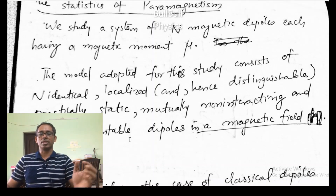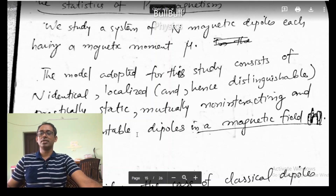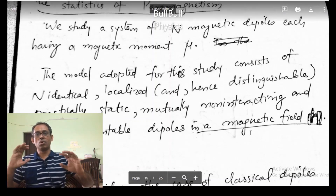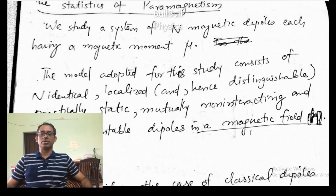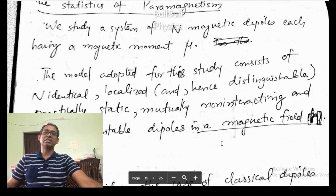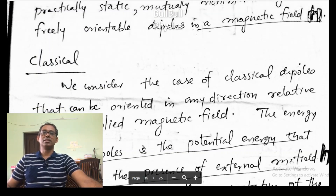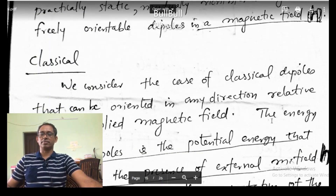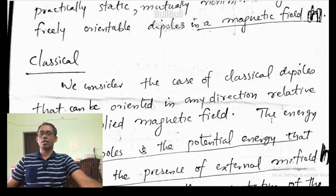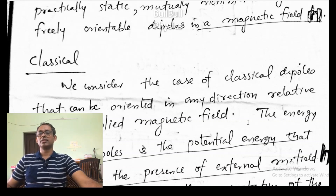And they are freely orientable in the magnetic field — it can orient in any direction with respect to the magnetic field. So, such a model or such a system is what we are going to study. This statistical analysis is carried out in the classical situation and in the quantum mechanical situation. So first of all, let us start with the analysis in the classical situation.